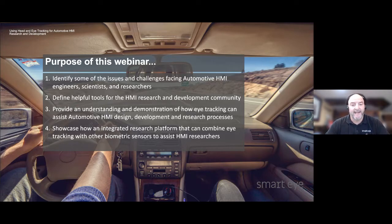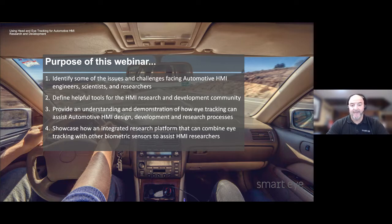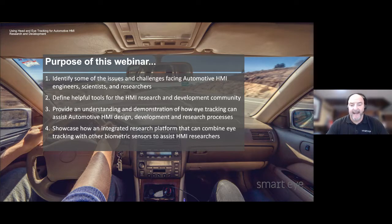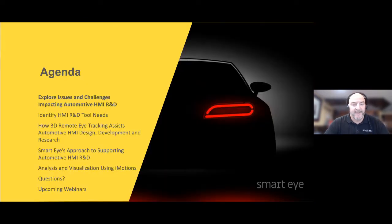As a first step, we'll identify the issues and challenges facing the automotive HMI community. Second, we'll define some of the characteristics of tools and solutions needed to help HMI engineers and researchers. Third, we'll provide an understanding and demonstration of how 3D remote head and eye tracking can assist with automotive research by enabling a more data-driven scientific approach. And lastly, we'll showcase how an integrated research platform combining head and eye tracking with other biometric sensors can greatly simplify and improve analysis and visualization capabilities for HMI research studies.